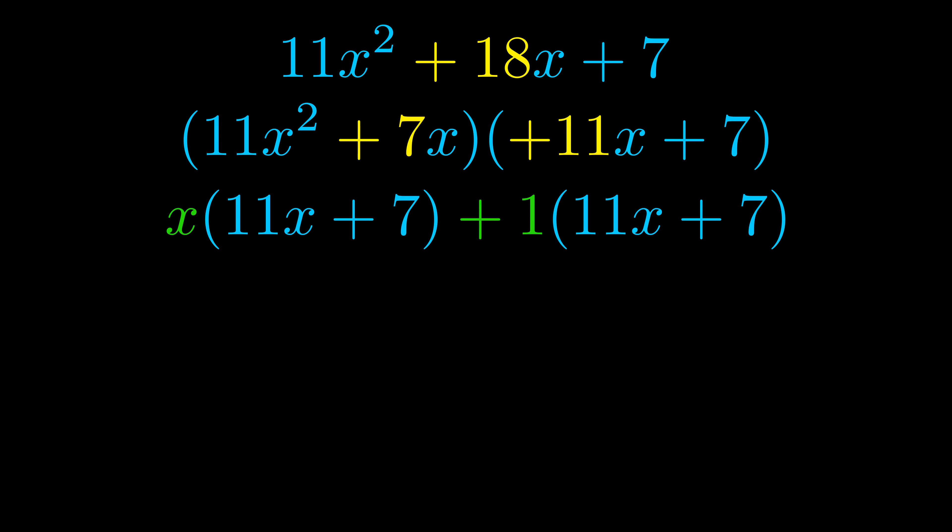Notice also how what remains inside of the parentheses is the same in both cases. The blue values are the same. Those blue values will become one of our factors and we will combine the two green values the GCFs that we pulled out to get the other one. And that is our fully factored equation.